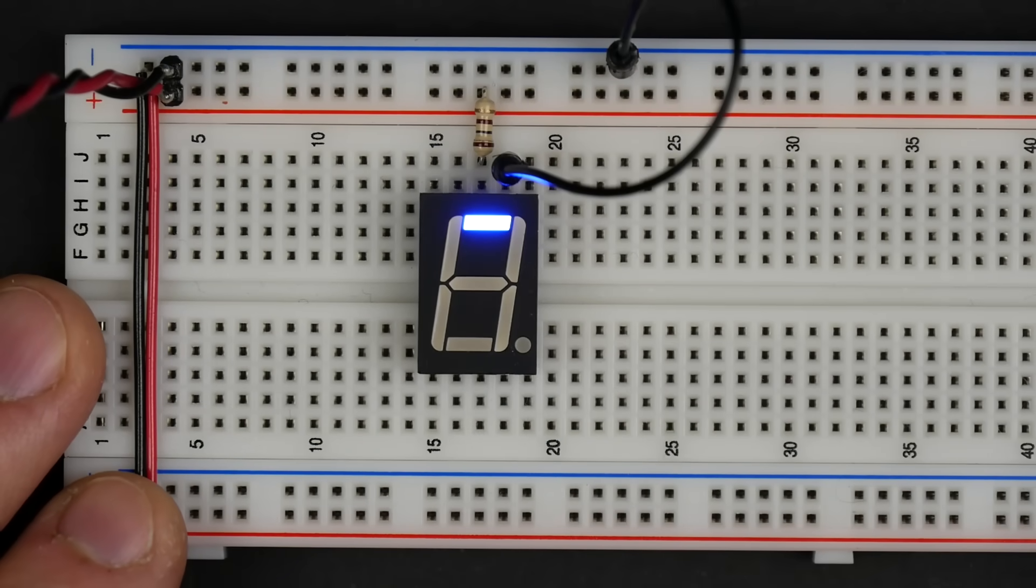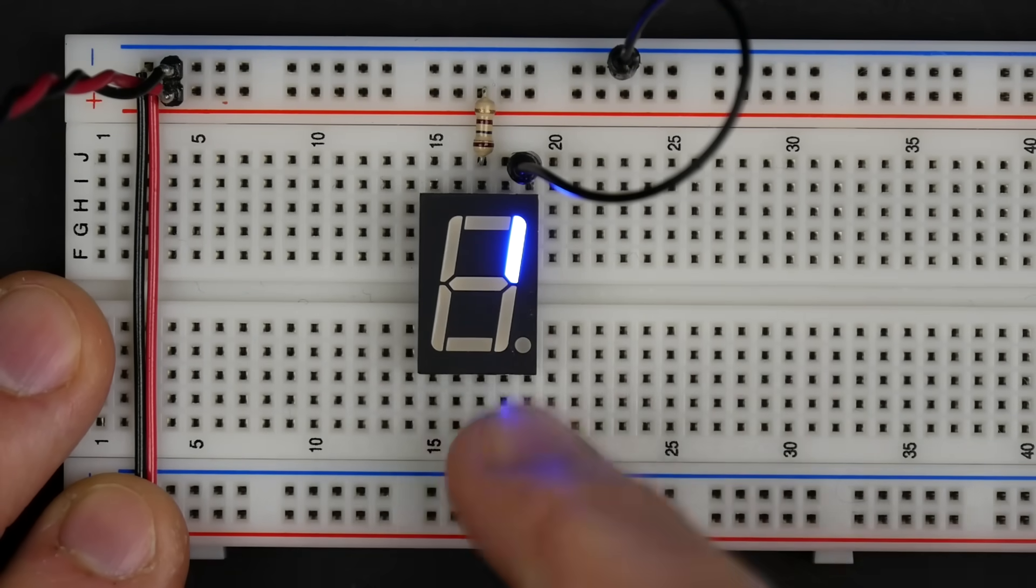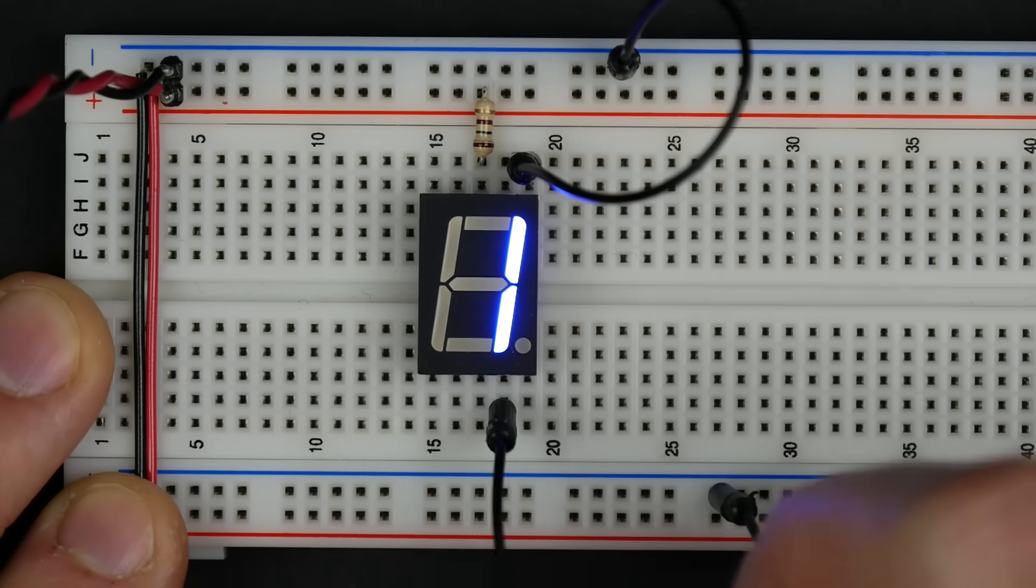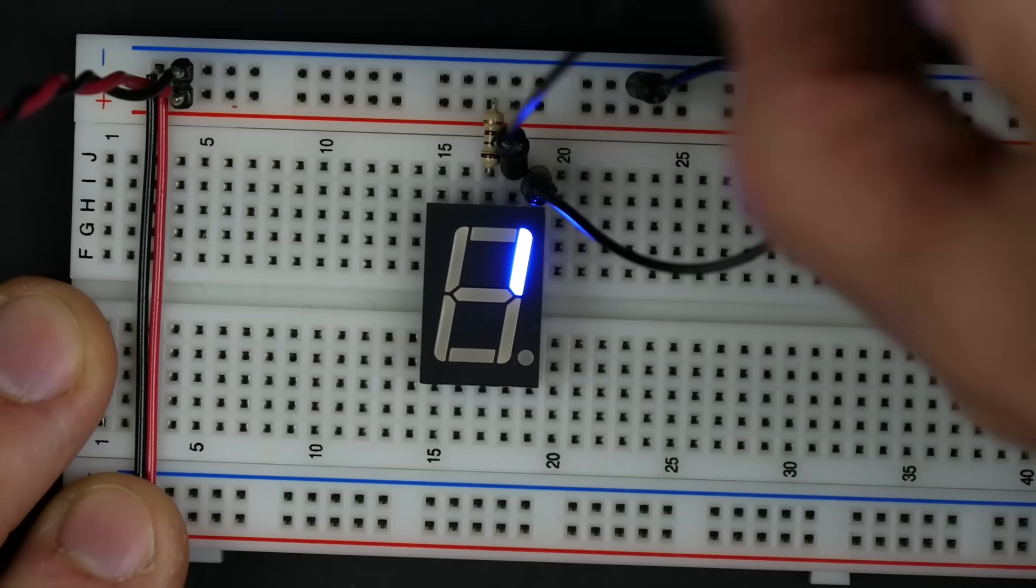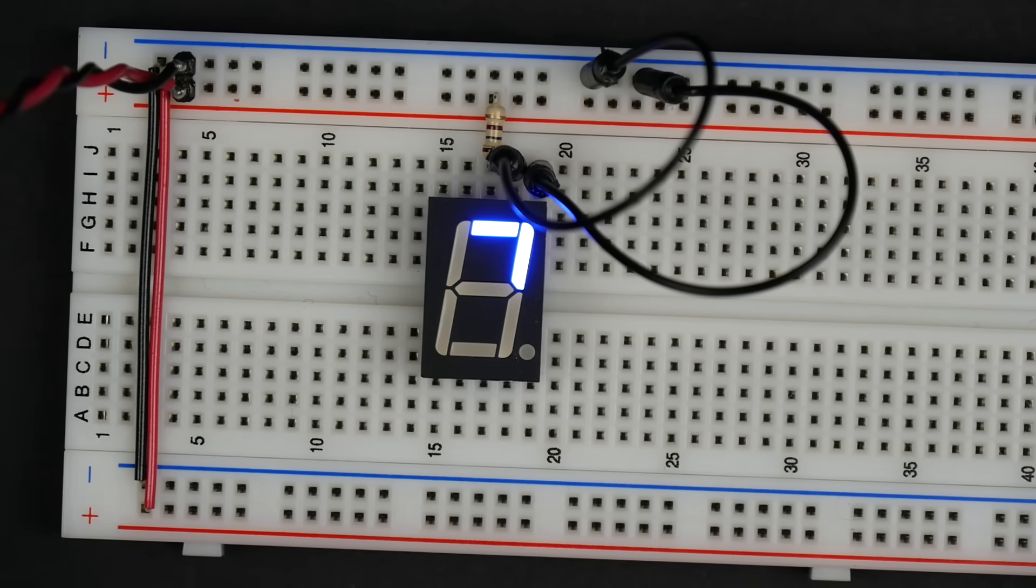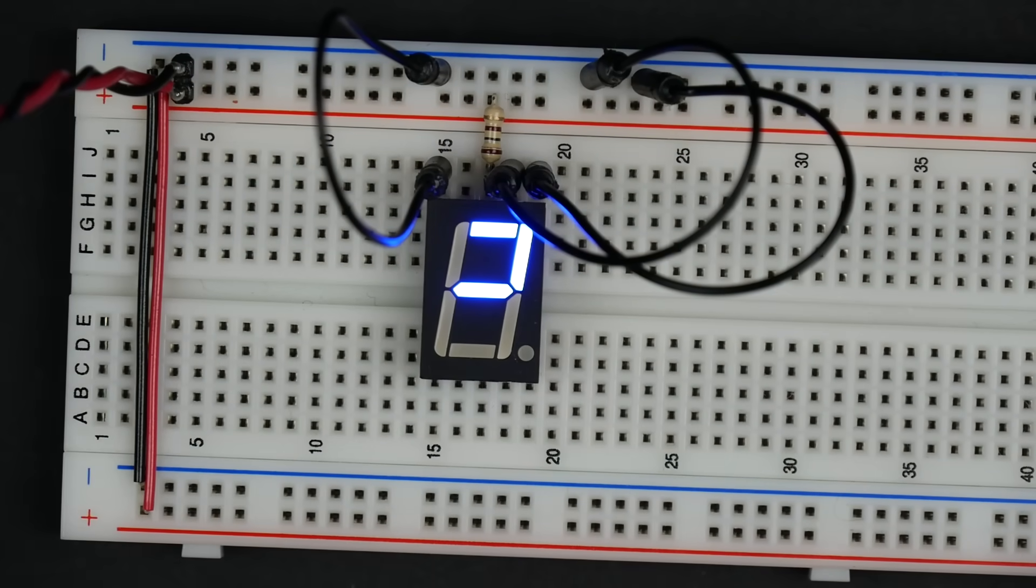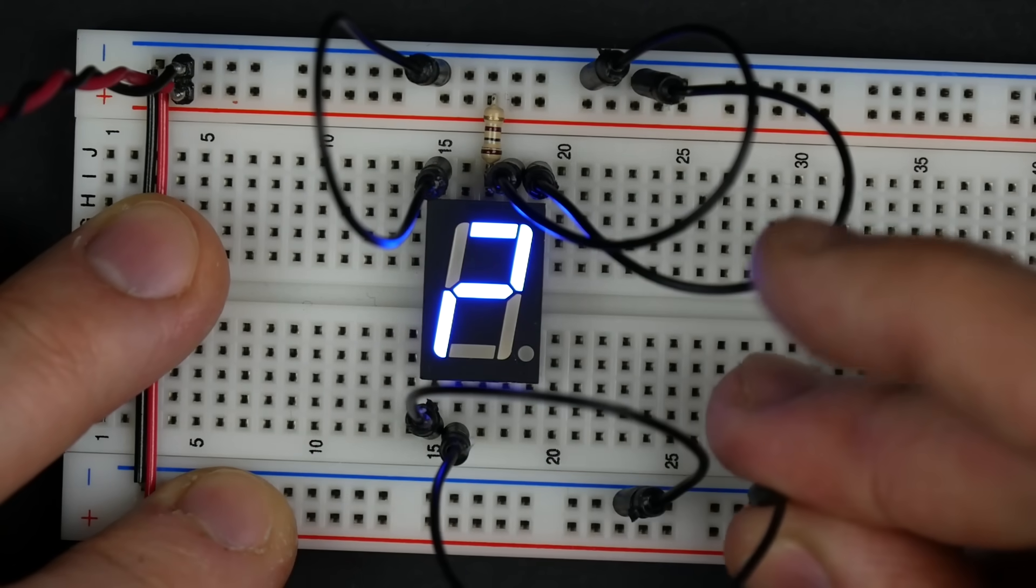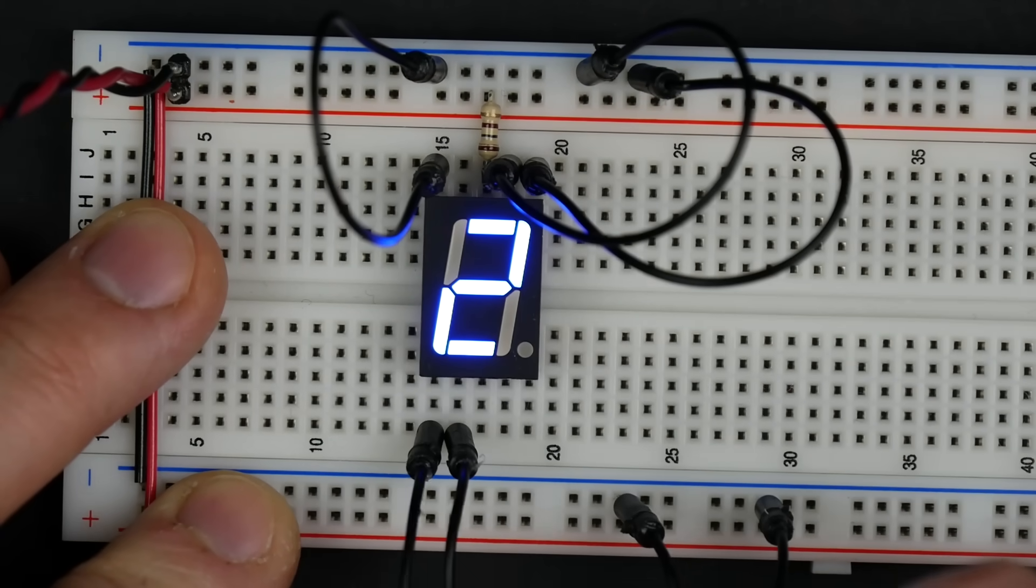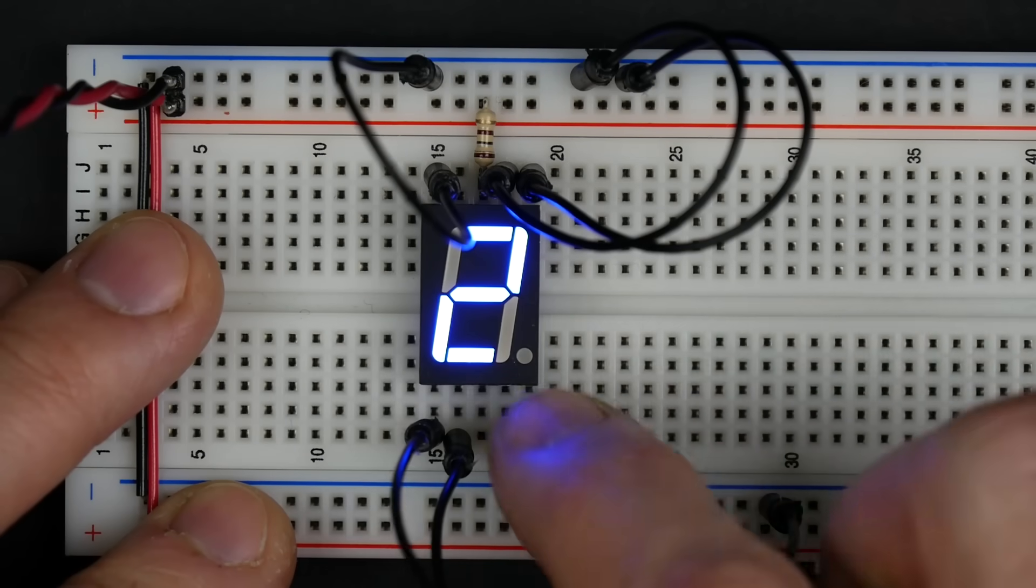And so you can see the inputs to this thing don't really let us input numbers, per se. There's not a binary input that just then displays a number. We have to display numbers on our own by lighting up just the right segments. So if we want to light up the number 1, we have to connect those two segments. If we want to do the number 2, then we have to find all the right segments for number 2. And that's how you get the number 2, is we have to manually know exactly which segments to light up to get each number. But of course we have a binary number that we want to display, so how do we convert that?